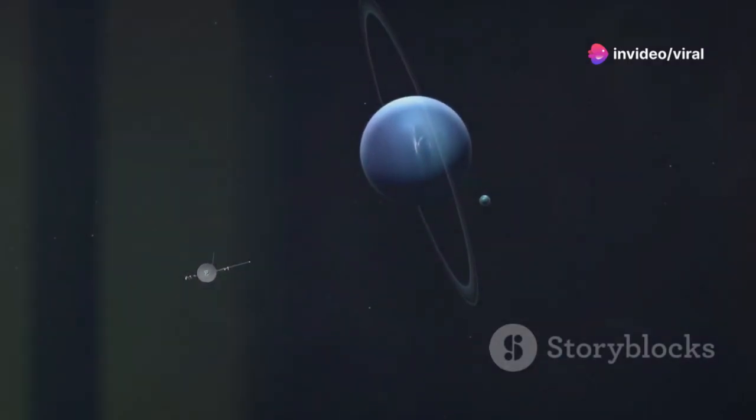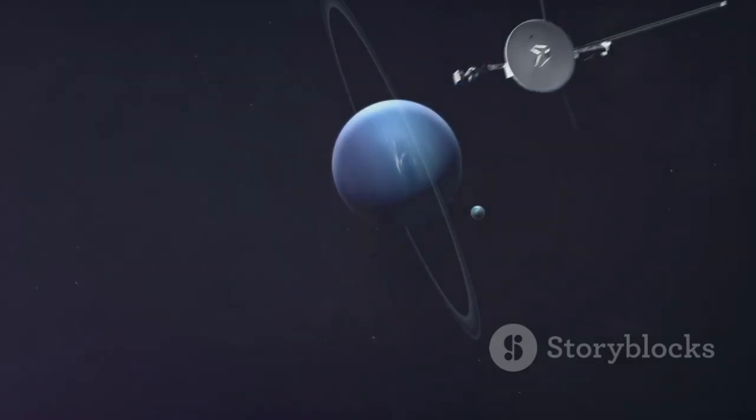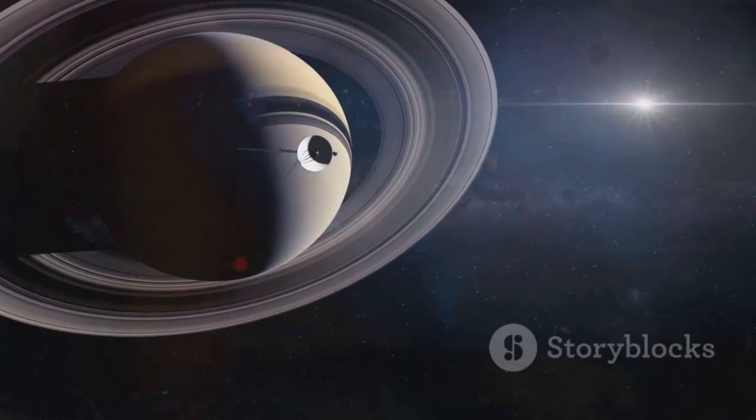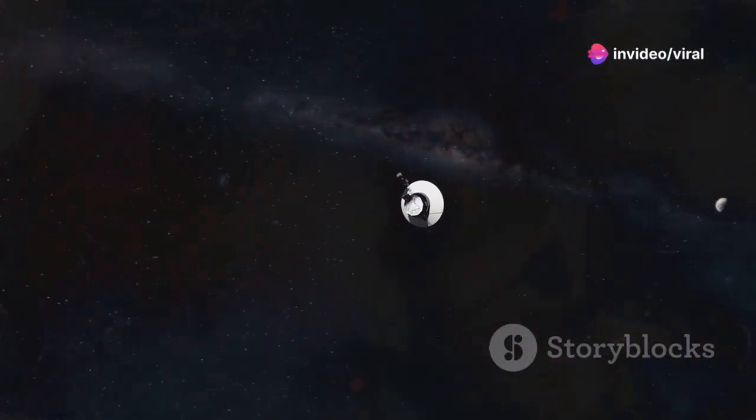Its journey has taken it past the boundaries of our solar system, through belts of radiation and rings of distant planets, braving the unforgiving environment of space. Voyager 1 has observed the wonders of Jupiter and Saturn, delivering images and data that transformed our view of the solar system.